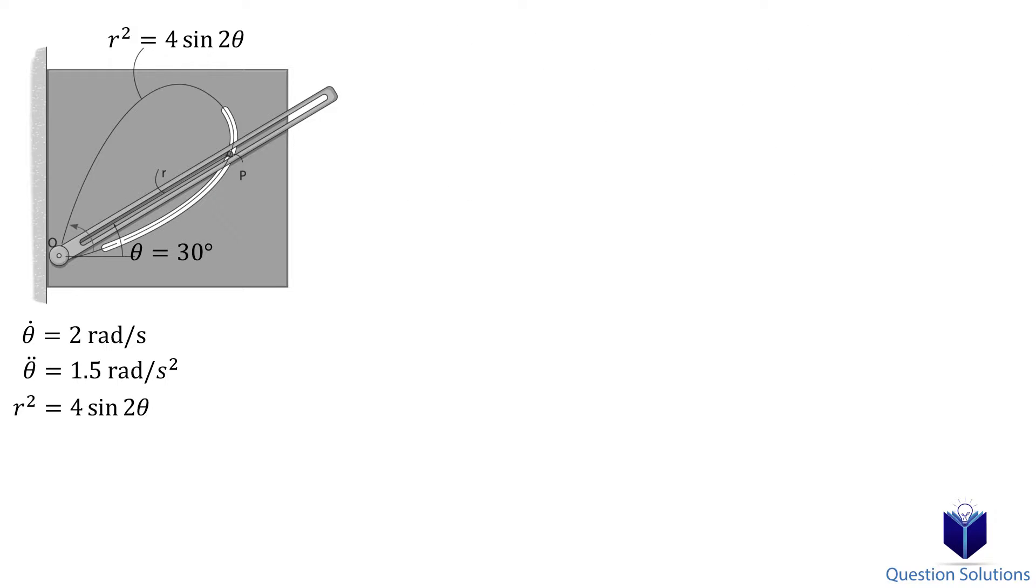To find the magnitudes of velocity and acceleration, we need the time derivatives of our equation, so we will start there. Remember to use the chain rule. This is probably the hardest part, but as long as you remember the chain rule and take it step by step, you can get to the second derivative.